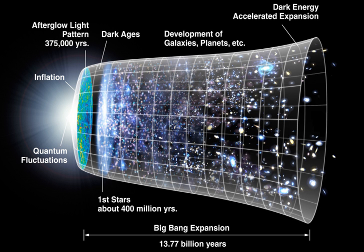For distances much smaller than the size of the observable universe, the Hubble redshift can be thought of as the Doppler shift corresponding to the recession velocity. However, the redshift is not a true Doppler shift, but rather the result of the expansion of the universe between the time the light was emitted and the time that it was detected. That space is undergoing metric expansion is shown by direct observational evidence of the cosmological principle and the Copernican principle, which together with Hubble's law have no other explanation. Astronomical redshifts are extremely isotropic and homogeneous, supporting the cosmological principle that the universe looks the same in all directions.